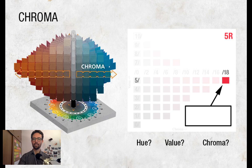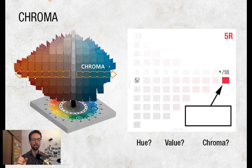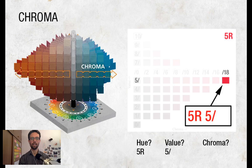That color I'm highlighting — can you find the code? If we go hue first, then value, then chroma: the hue is 5R, the value is 5/, and the chroma is /18. So this is the code for that specific super high chroma, value-5, pure red. That's how you label any color precisely in the Munsell system.